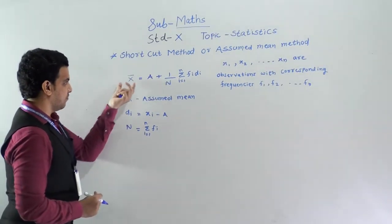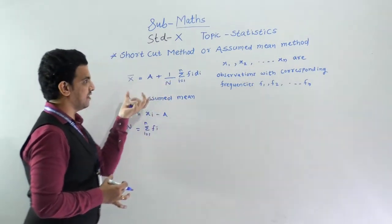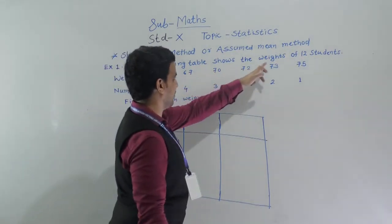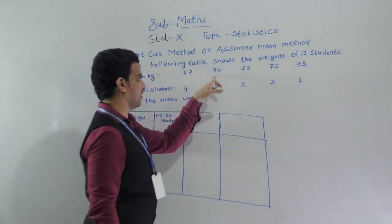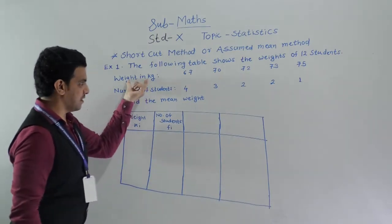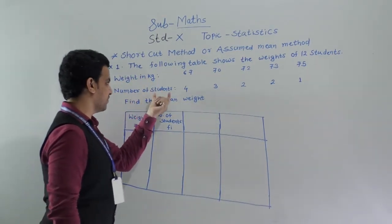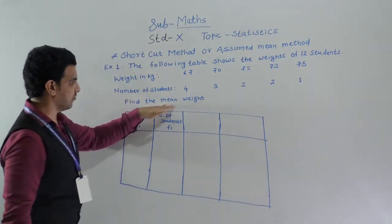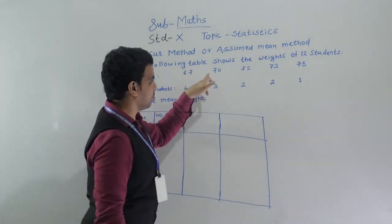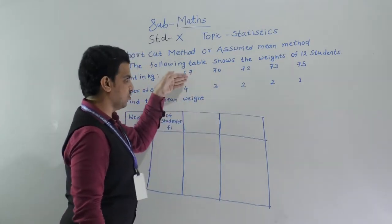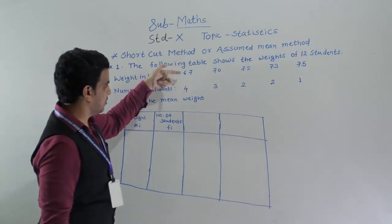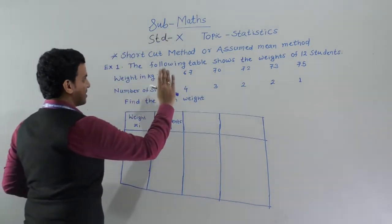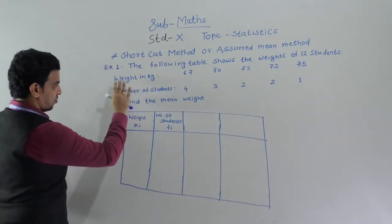This formula will be more clear from examples. So we will now take an example. For example: the following table shows the weights of 12 students. Here, weight in kilograms: 67, 70, 72, 73, and 75. These are xi, the observations. The number of students, that is the frequency, is given as 4, 3, 2, 2, and 1. Here observations are very big, so we cannot easily use the direct method.